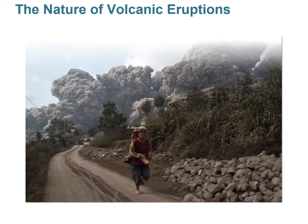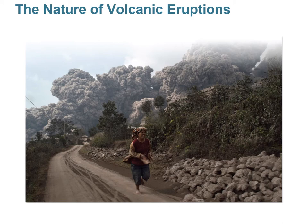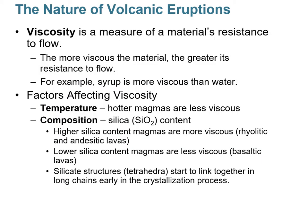Those three factors control viscosity, which controls the nature of the eruption. Viscosity essentially means resistance to flow. If magma has high resistance to flow, that usually leads to crazy eruptions — like this one in Indonesia, Mount Sinabung. That pyroclastic flow could incinerate you instantly. It's a very violent eruption.